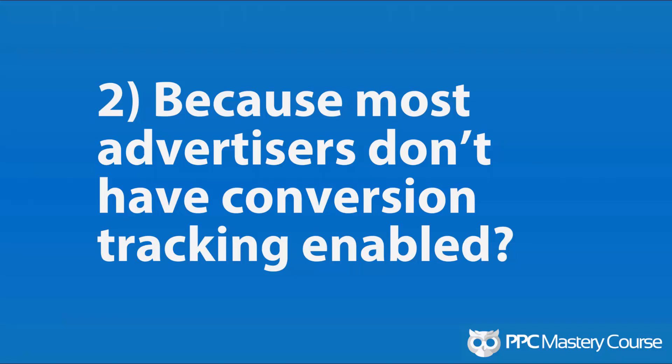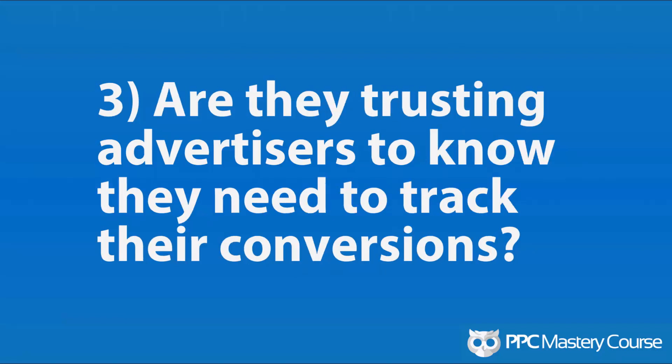Number two: maybe it's because most advertisers don't have conversion tracking enabled on their site. Maybe Google looks at their own numbers and says only a small percentage of their advertiser population actually uses conversion tracking, so they're not going to show it by default because most people will see it as an empty column. Number three: maybe they're trusting that their advertisers are smart enough to know they need to track conversions and can add columns. Well, I beg to differ — I've taught over 5,000 people how to use Google AdWords and get certified, and the majority of them don't know they can add columns showing conversions. It's not intuitive at all. My PPC course is often the first time many people see that they can actually track conversions easily in the AdWords interface. So I would invalidate that reason based on my own personal experience.